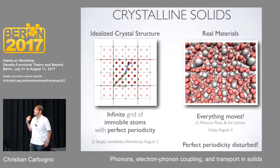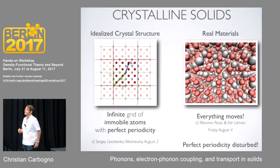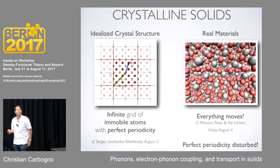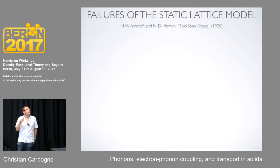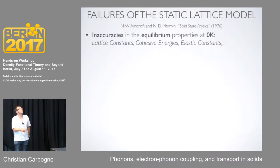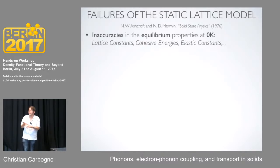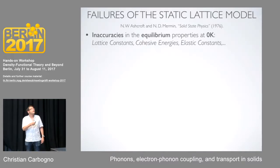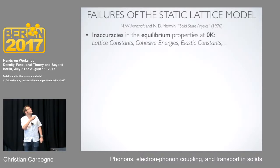This has some very important consequences for many features of materials. Even at equilibrium properties at 0 K — talking about lattice constants, cohesive energy, elastic constants, and so on — the small quantum nuclear effects, even at 0 K, slightly alter these lattice constants and give you an error if you don't account for them.